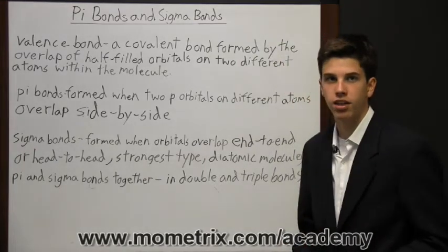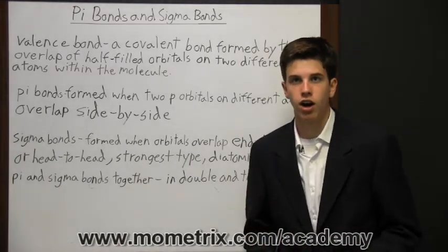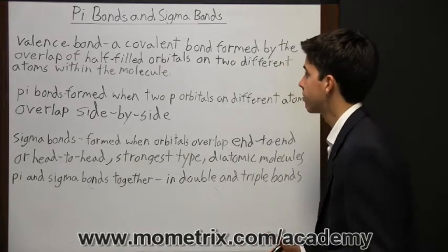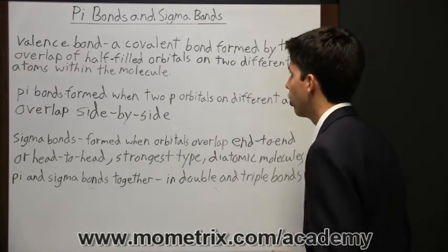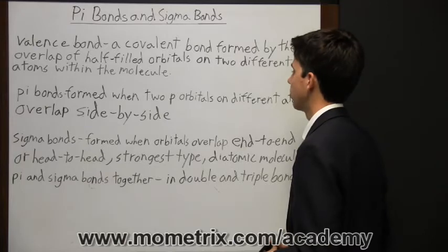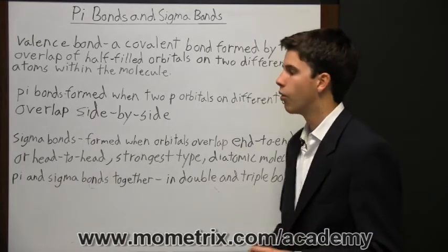So again, pi bonds and sigma bonds, according to VSEPR theory, are valence bonds. And valence bonds are covalent bonds formed by the overlap of half-filled orbitals on two different atoms within the molecule.